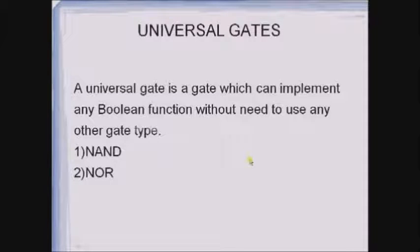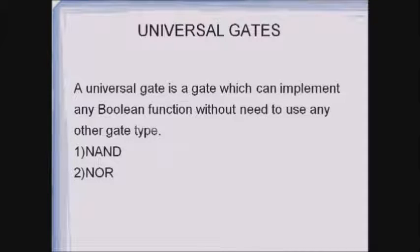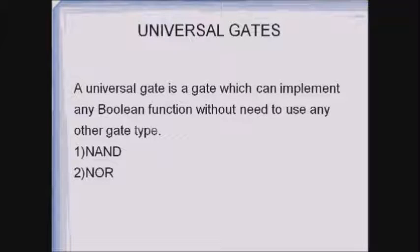Today in this session we will discuss about universal gates. Up to now we have seen all the basic gates like AND, OR, NOT, XOR, XNOR, NAND and NOR. Out of these gates, two gates are said to be universal gates because with the help of those two gates we can implement any kind of boolean expression without the need of the other gates. If any gate is used for implementing any kind of boolean expression without the use of the other logic gates, then that gate is called as a universal gate.